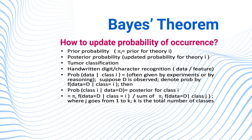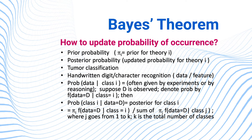How do we update the probability of occurrence? Prior probability — denoted π_i — is the prior probability for theory i. Posterior probability is the updated probability for theory i. Key application areas include tumor classification, handwritten digit and character recognition. We will distinguish in the coming slides what is the difference between prior and posterior probability.